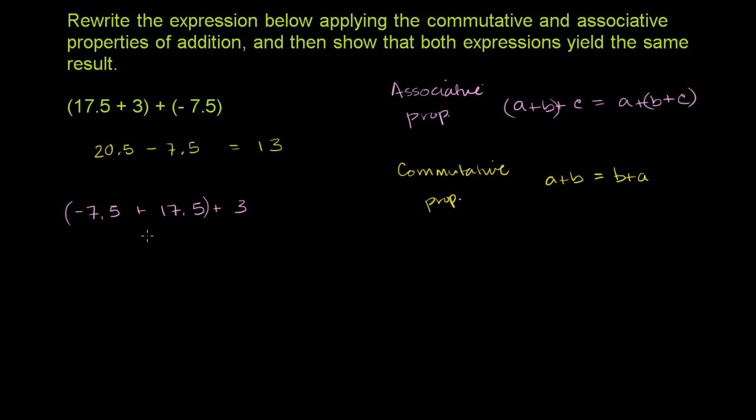We actually got here using both the commutative and the associative property. So we get negative 7.5 plus 17.5. This is the exact same thing as 17.5 minus 7.5. It might be easier for you to realize, OK, I'm adding two numbers of different signs.